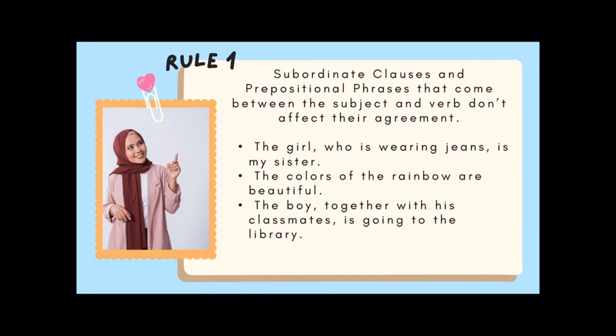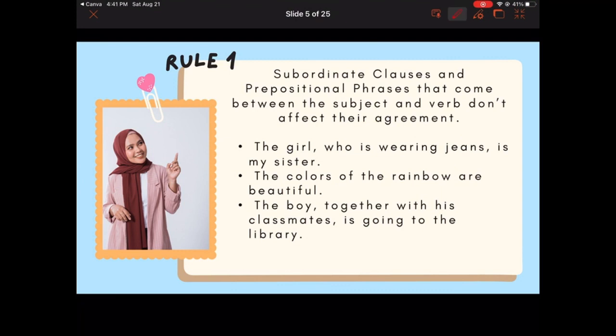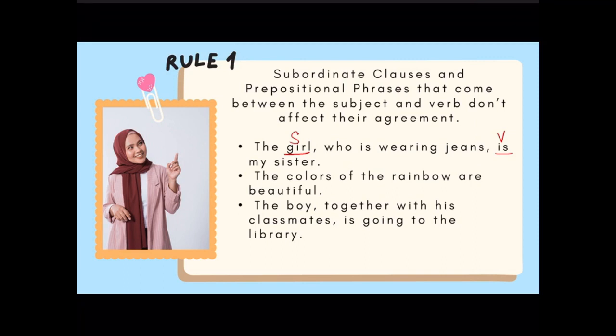Rule number one states that subordinate clauses and prepositional phrases that come between the subject and verb don't affect their agreement. In this example, the girl who is wearing jeans is my sister. Of course, girl is your subject and is is your verb. The subject and the verb are both singular. The colors of the rainbow are beautiful. Colors is your subject and are is the verb. In the next sentence, boy is your subject and is is your verb. Both of them are singular.